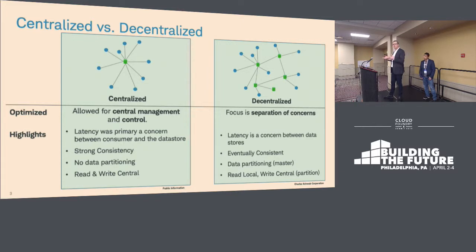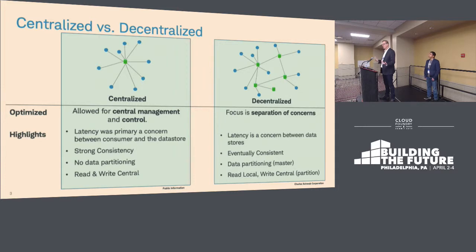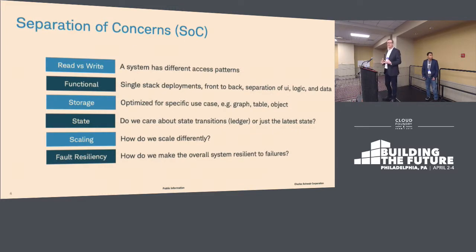It's really about separation of concerns, because those concerns address things around consistency and scalability. A couple of key highlights to keep in mind: latency, or the speed of light, is still a problem. It doesn't matter how you spin it. You have multiple data centers you have to deal with. In the centralized model, you really only had to deal with the latency between the consumer of the data and the data store itself. In distributed, we pivot the latency more because we need replication, synchronization. Latency is now different — that's why we have things like eventual consistency. We're also partitioning the data more, and read and write patterns are different in your systems.